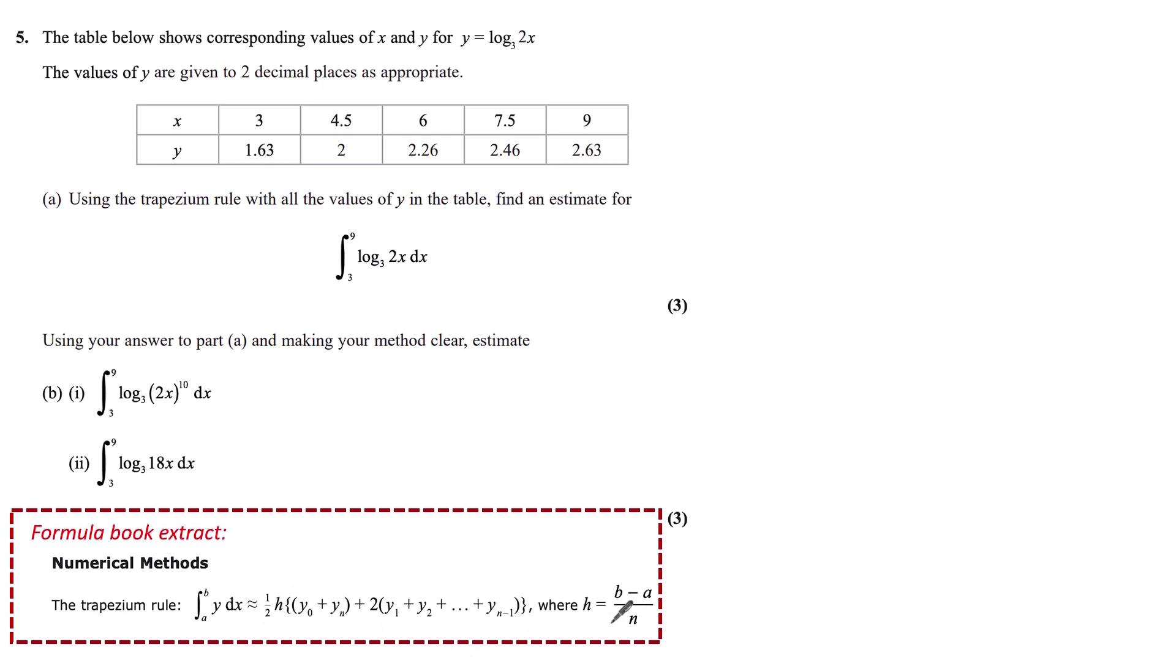We are told h equals b minus a divided by n. n is actually the number of y values minus 1, because if we notice our first y value is always y0. The reason for this is that this n value represents the number of trapeziums we are finding the area of.